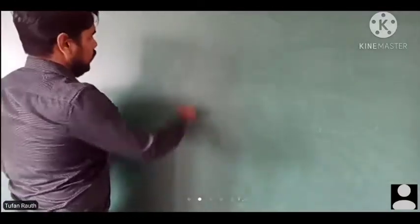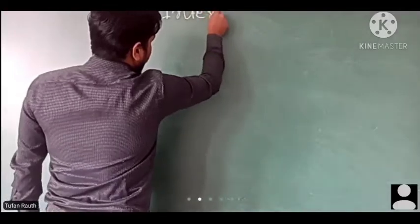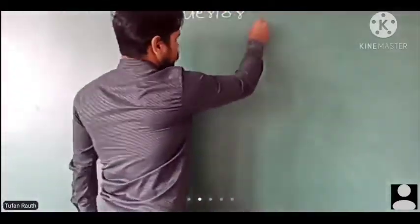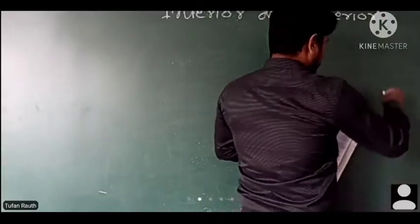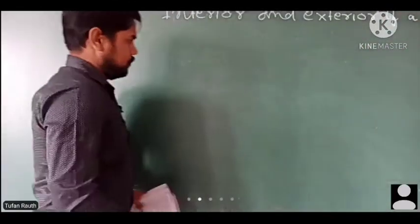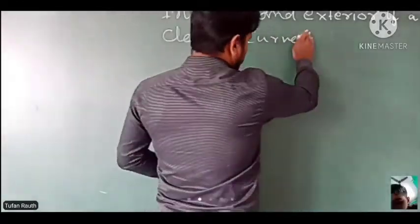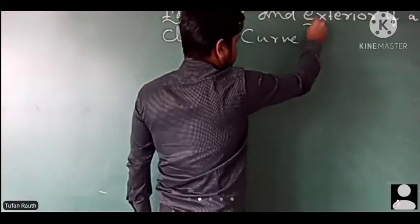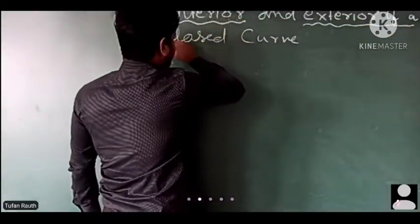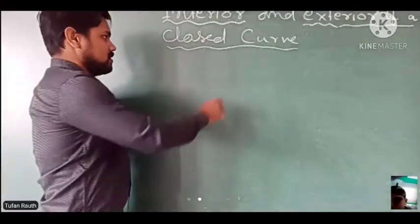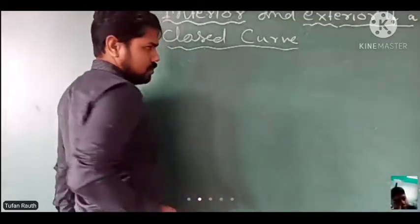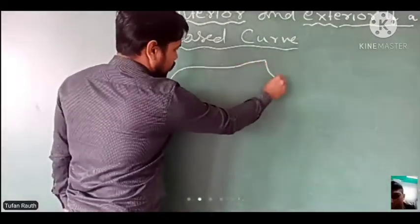There is one more topic in this chapter: interior and exterior of a circle. So, interior and exterior — from the terms themselves, interior means inside and exterior means outside. Closed curve means any closed curve, whether circular or any other shape.